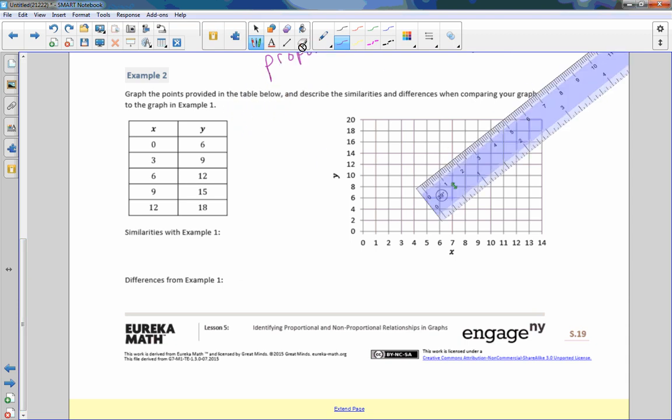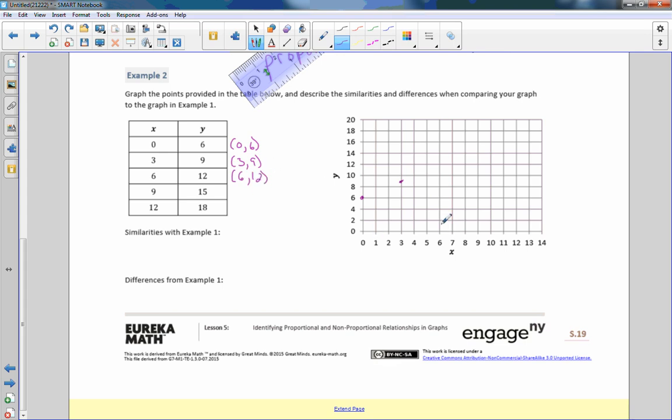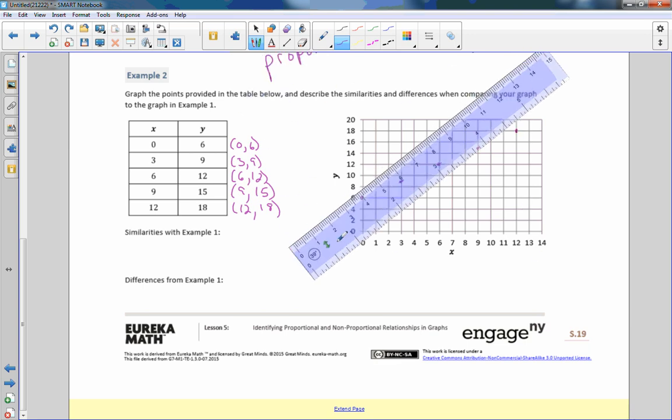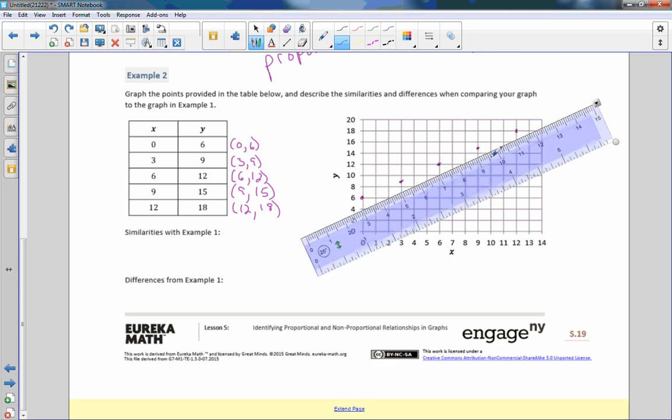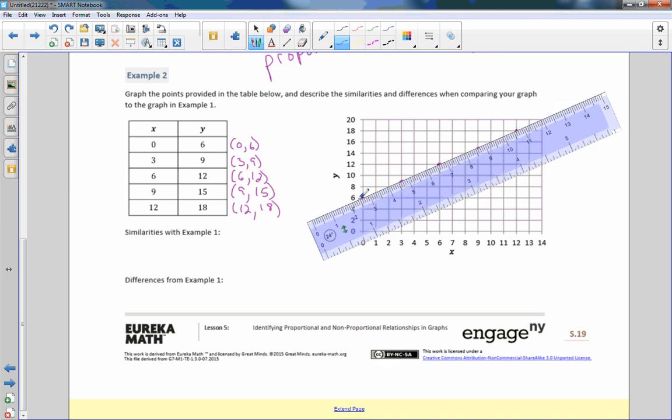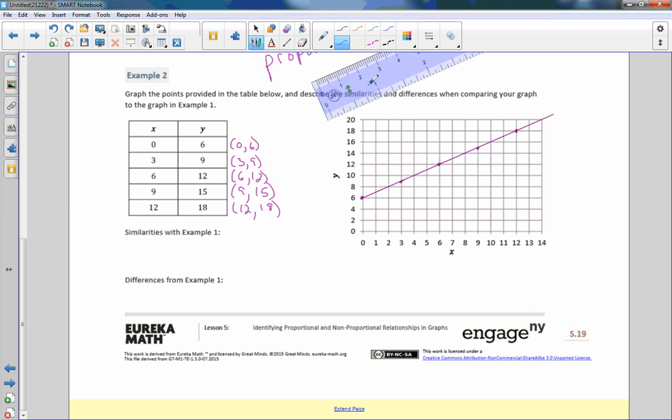Here's example two. Graph the points provided in the table below and describe the similarities and differences when comparing your graph to example one. So now I'm going to plot the point, and I'm going to write these each time just so you remember they're ordered pairs and you need parentheses. Zero six, three comma nine. So here's zero six. Three nine is right here. Six comma 12, go over six up to 12. Nine comma 15, so go over to nine, up to 15. And 12 comma 18 is 12 comma 18. Bring my ruler down. Line them up. And drop the line.